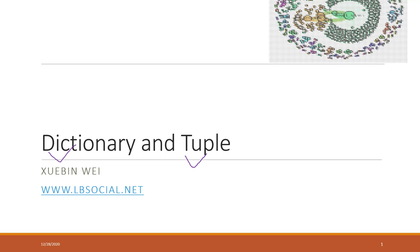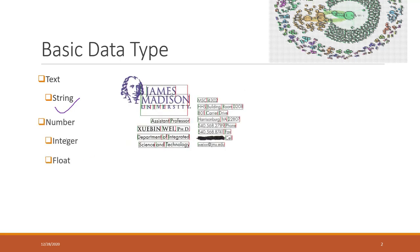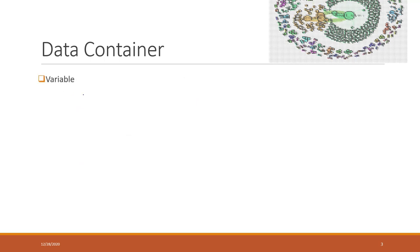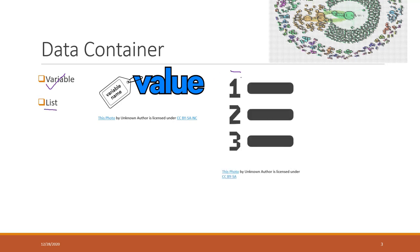Those are the last two types of data containers. We already mentioned string, integer, and also float. In our previous lecture, we also mentioned the variable, which is the label of the values. Last week we talked about the list, which is an ordered collection of values. We also mentioned the set, which is a collection of unique values.